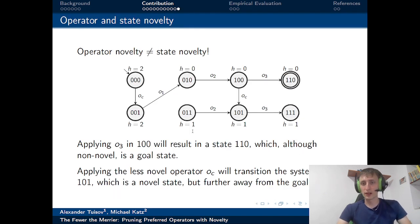Lastly, I'd like to point out that operator novelty is not the state novelty. Novel operators can lead to non-novel states and vice versa. For example, here the state 110 that operator O3 leads to is non-novel by the definitions that we have seen in the background, while the state 101, which operator OC leads to, is novel by the same definitions. But the operator O3 is novel and leads to a non-novel state which is also a goal. And operator OC, which is a non-novel operator, leads to a novel state which takes us away from the goal.